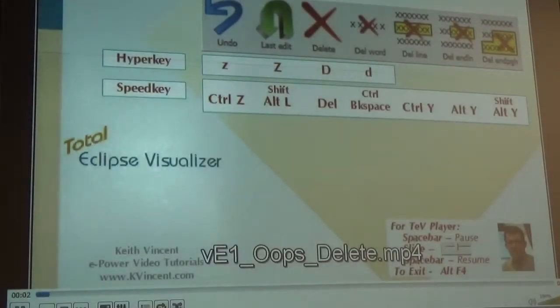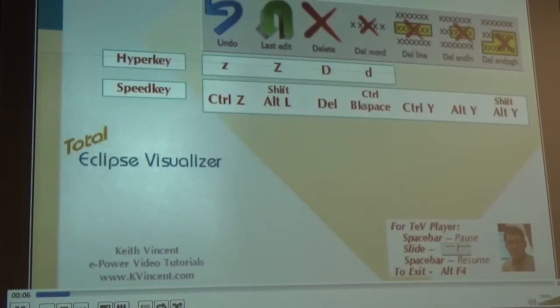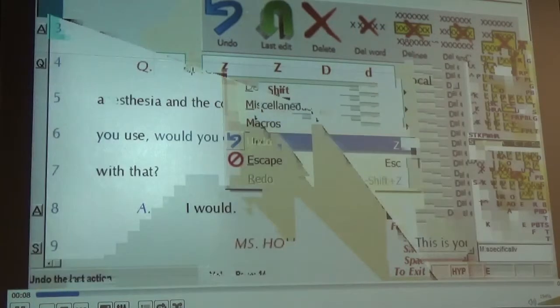Let's see how the oops and delete keys work. The oops key can undo editing steps. The command is Control C or hyper key C. For example, if I add a suffix to specific and I pick the wrong one.